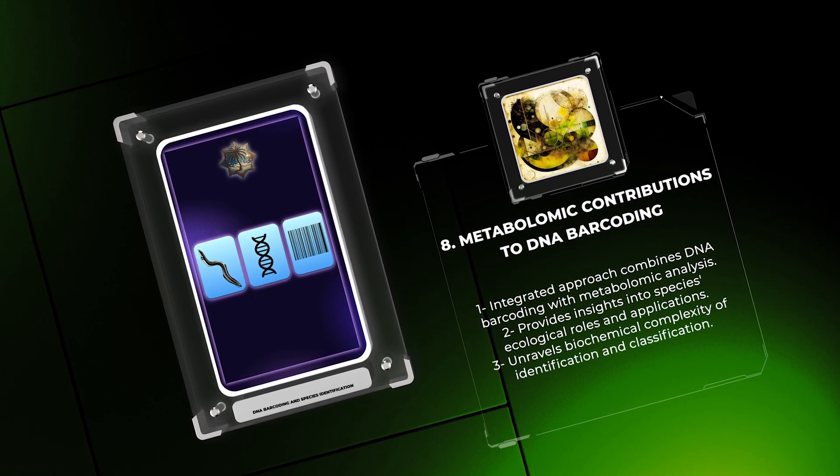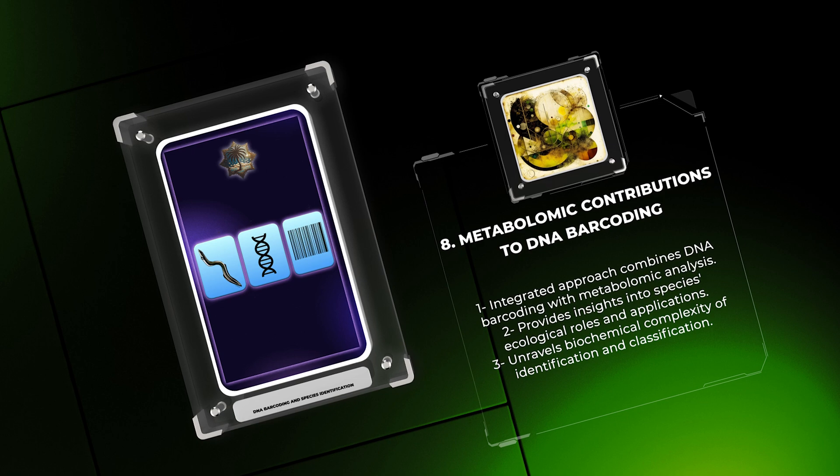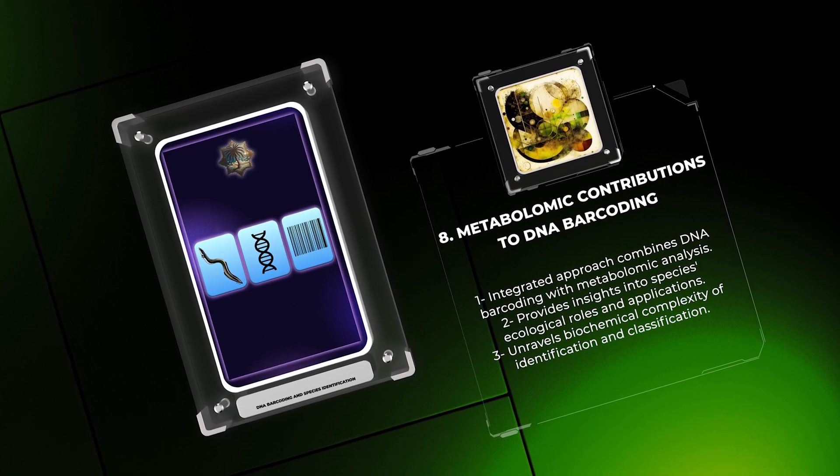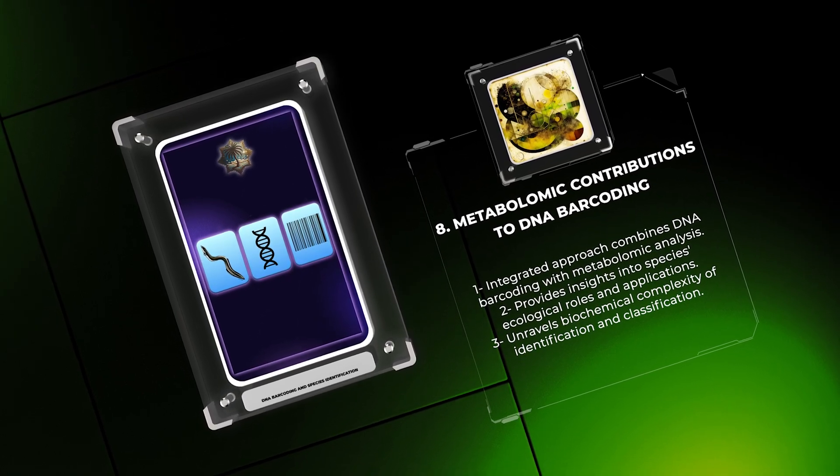By combining DNA barcoding with metabolomic analysis, scientists can unravel the intricate biochemical complexity underlying species identification and classification.